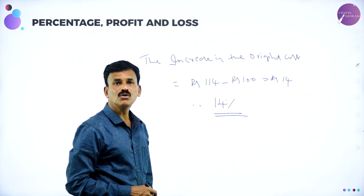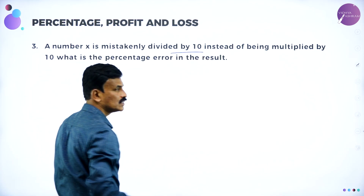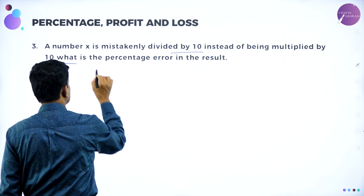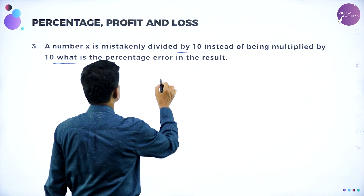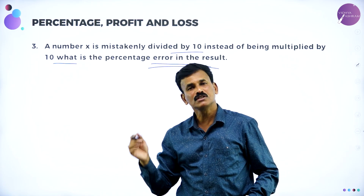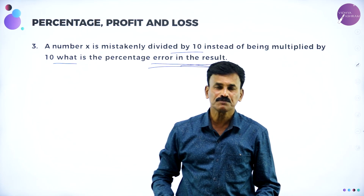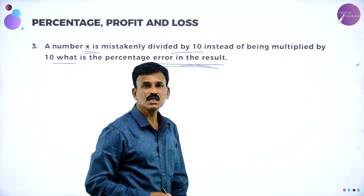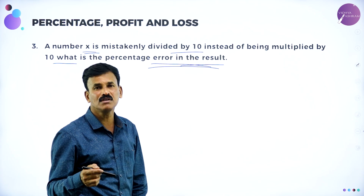Next problem: a number x is mistakenly divided by 10 instead of being multiplied by 10. We have to find the percentage error in the result. If you multiply the number x by 10 you will get 10x. If you divide the number by 10 you will get x divided by 10.